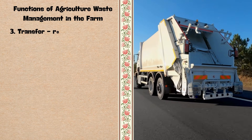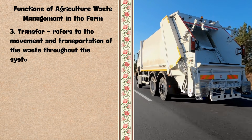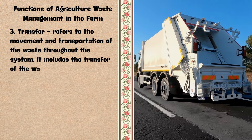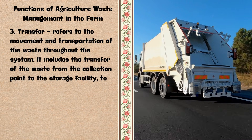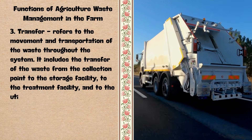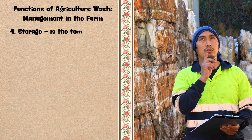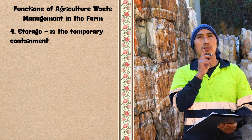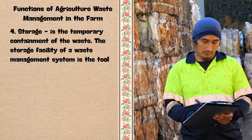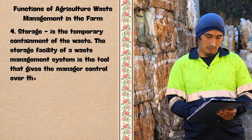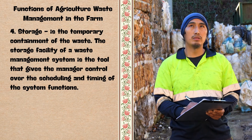3. Transfer — it refers to the movement and transportation of the waste throughout the system. It includes the transfer of the waste from the collection point to the storage facility, to the treatment facility, and to the utilization site. 4. Storage — it is the temporary containment of the waste. The storage facility of a waste management system is the tool that gives the manager control over the scheduling and timing of the system functions.